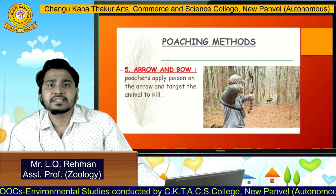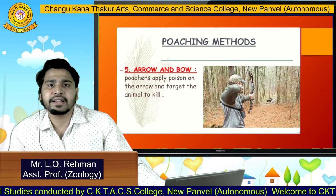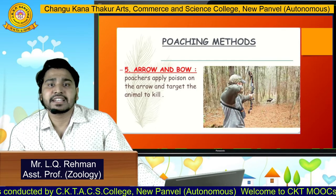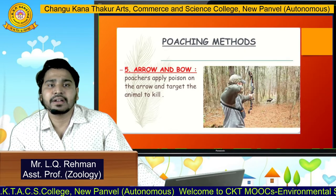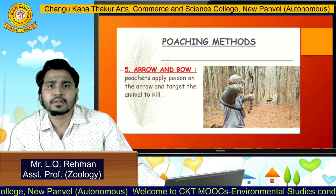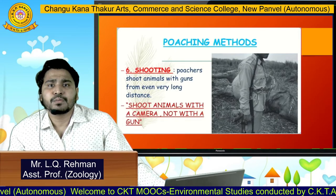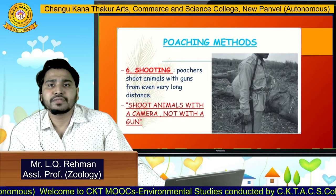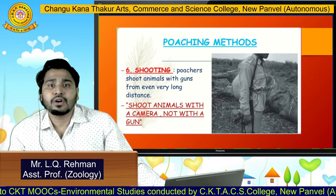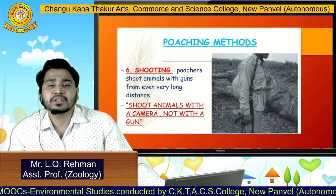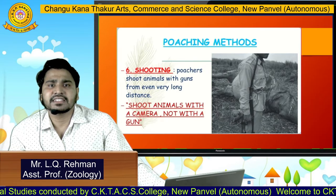Next is arrow and bow. It is a very traditional method of poaching or hunting. Poachers apply poison on the arrow and target the animal to kill. Next is shooting — poachers shoot animals with guns from a very long distance. The animals do not notice the shooters and get killed very easily.